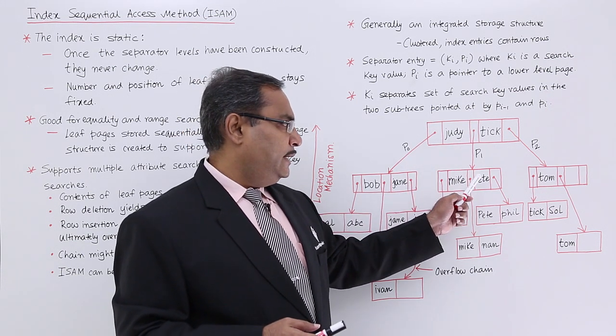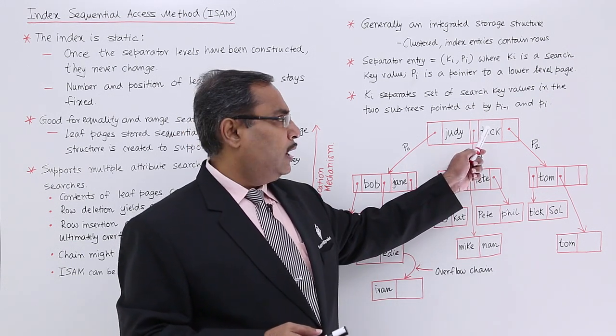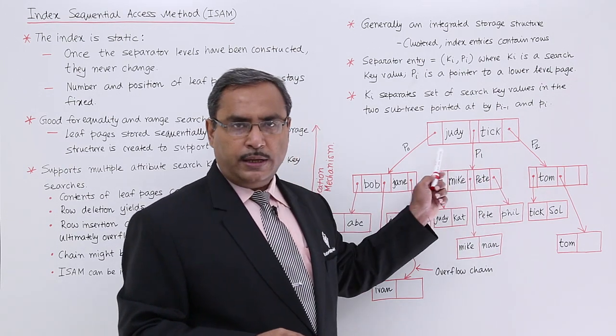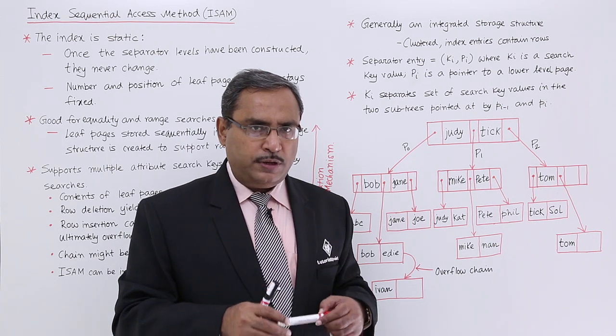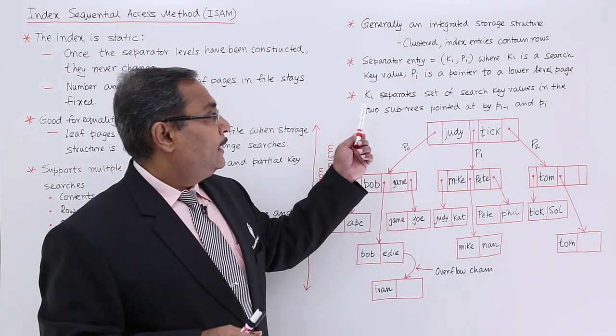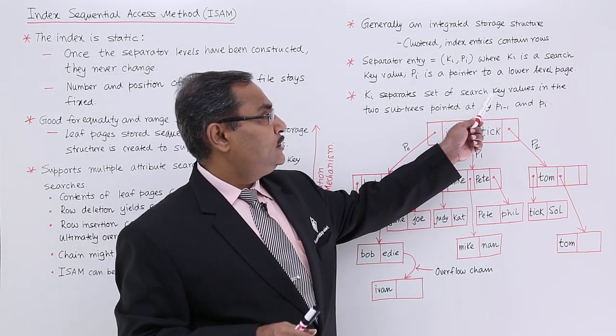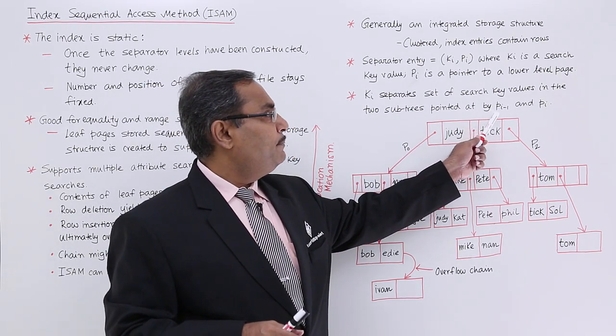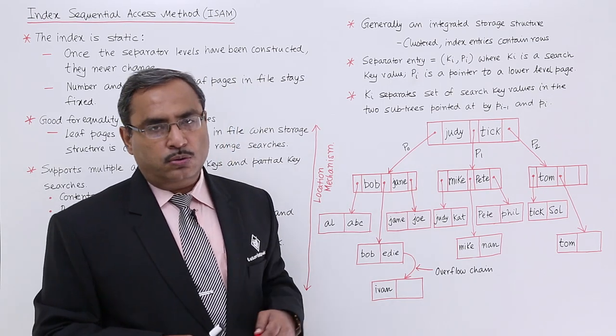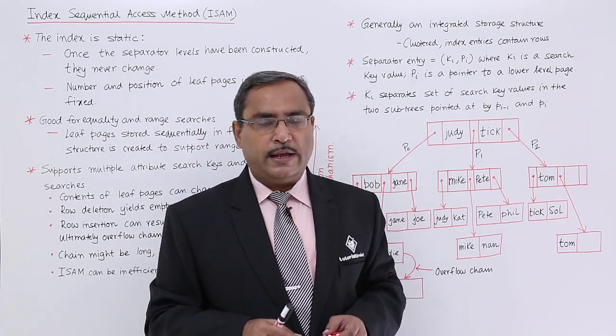Here it is K1 and here it is P2. In this way the indexing and the respective key values will be kept in a node. KI separate set of search key values in the two sub trees pointed at by PI minus 1 and PI. Whatever we have mentioned, it is working accordingly.